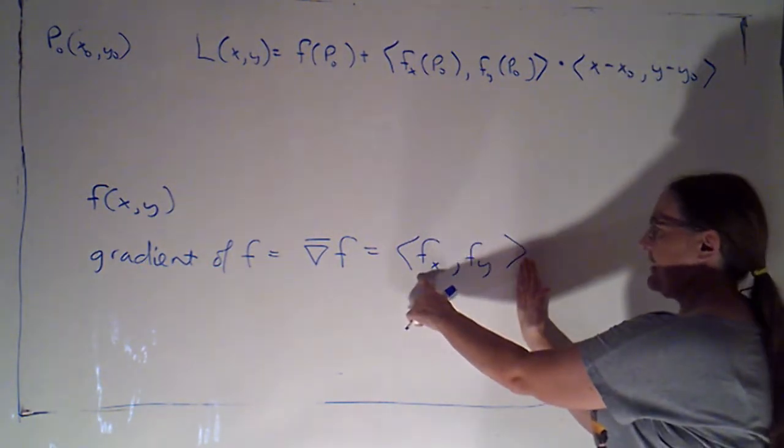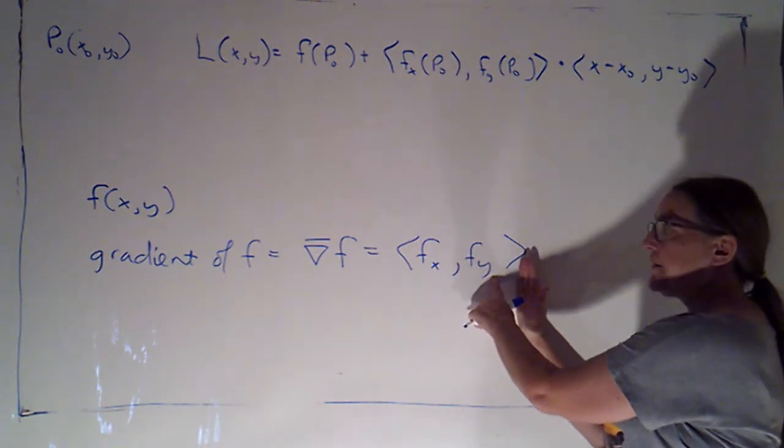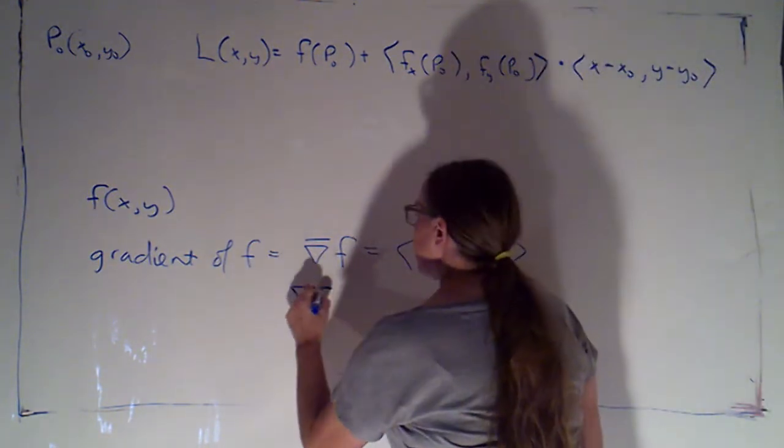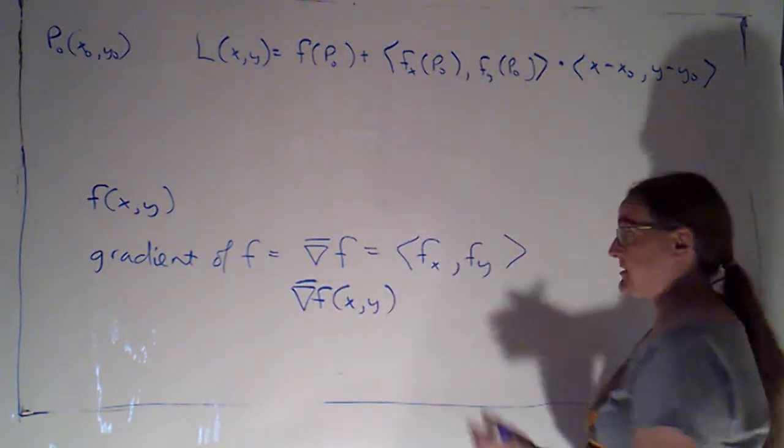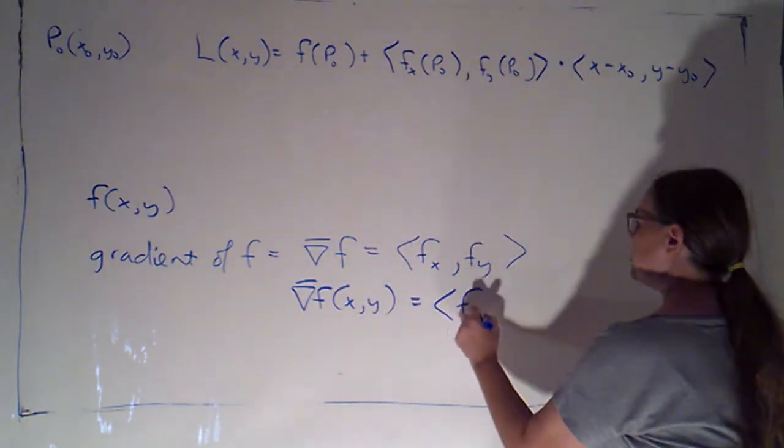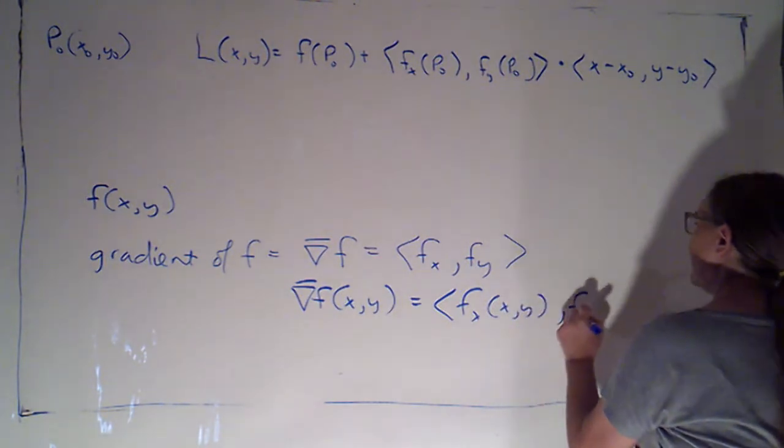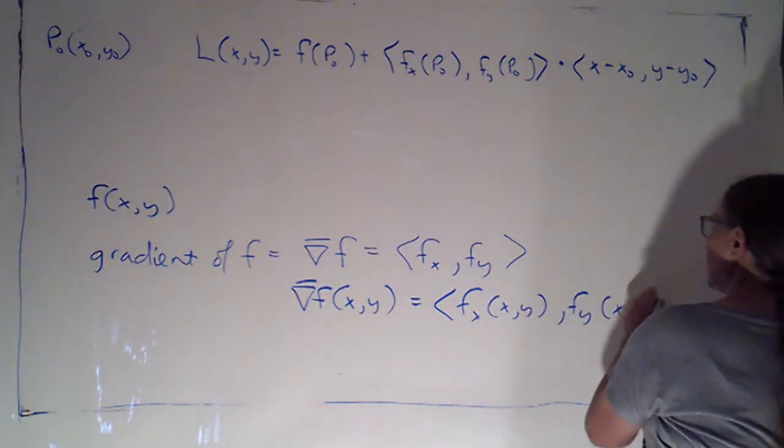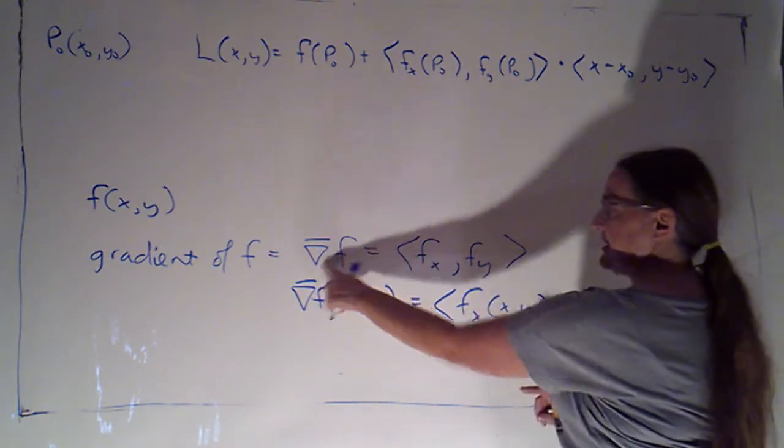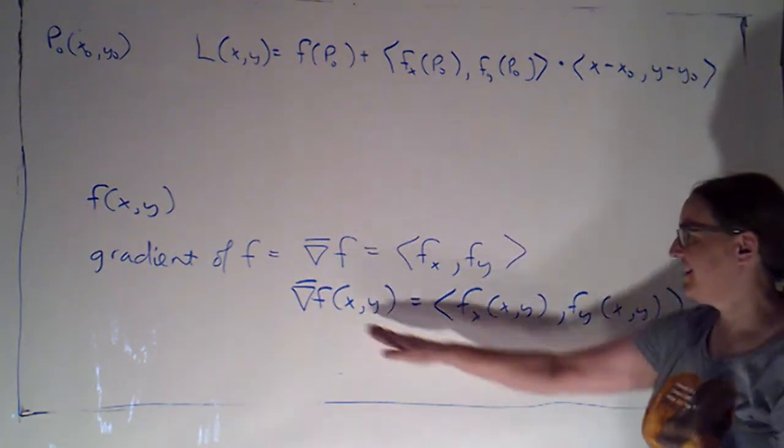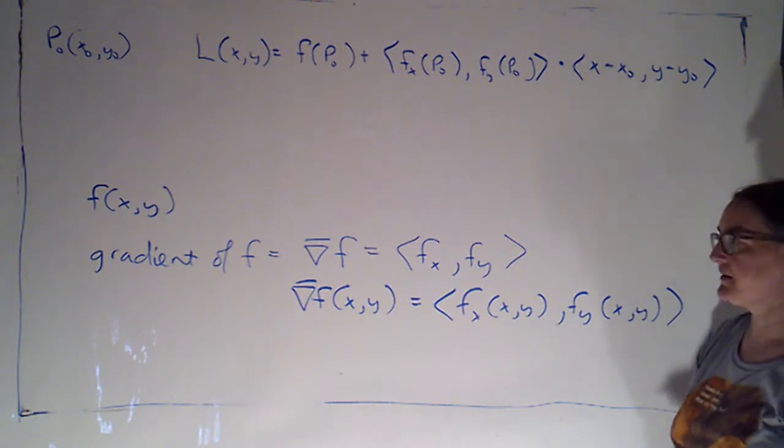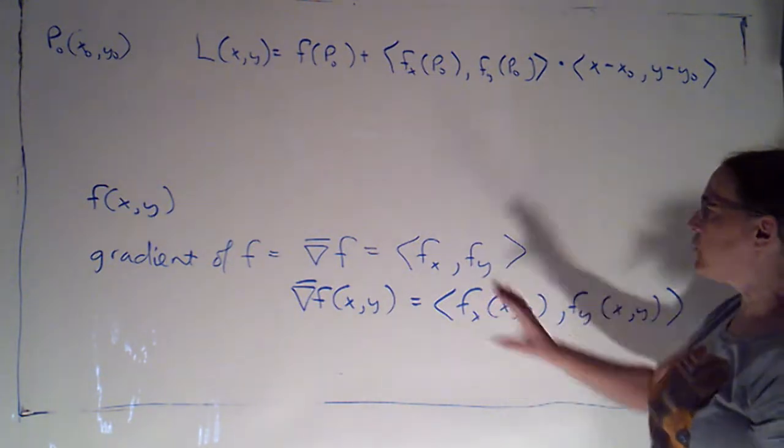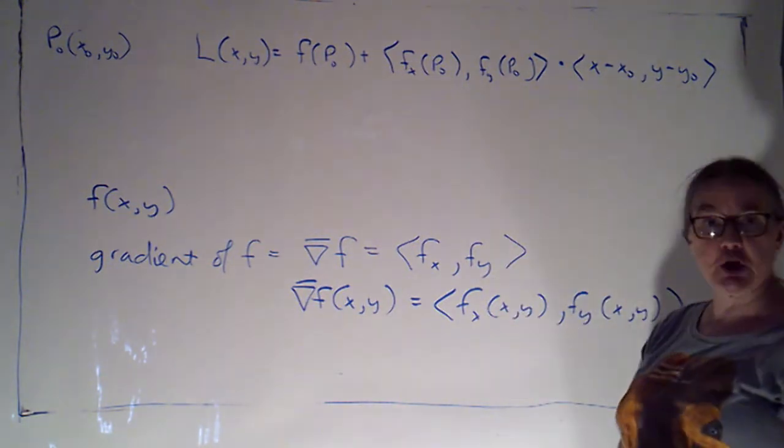So that would be f sub x, f sub y. Now, if I wanted to, I could write the gradient of f as a function of x and y, because of course these two partial derivatives are functions of x and y. Sometimes we simply write the names of the functions and omit the names of the inputs. Sometimes we prefer to write the inputs. So that would be the gradient for a function of two variables.